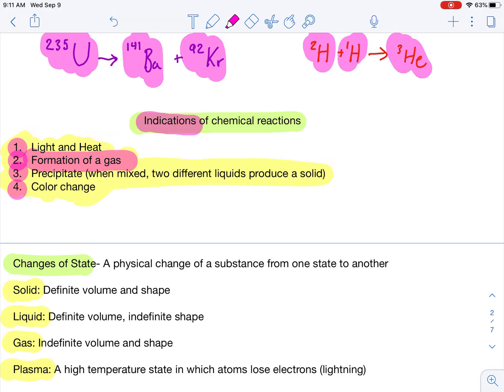Light and heat, such as fire. Formation of a gas. If I were to throw some lithium in water, I would have some hydrogen gas produced. A precipitate. When mixed, two different liquids produce a solid. That solid, by definition, is a precipitate. I will show you a video of that. And a color change. So, if I have something that's blue, and it changes to green, most likely, a chemical change occurred.